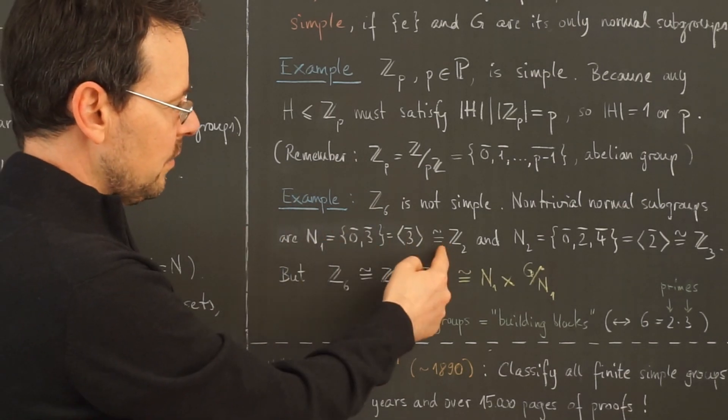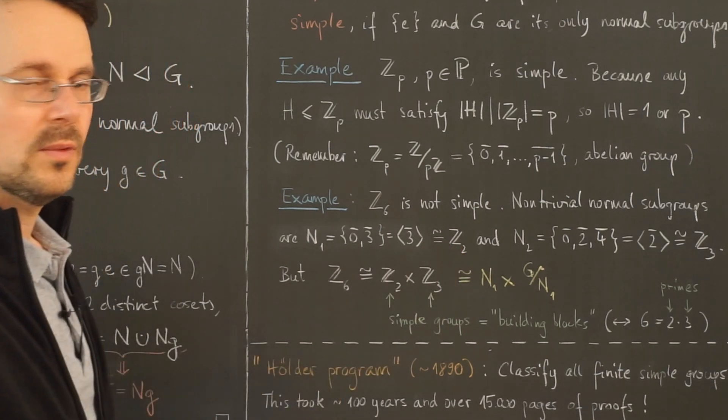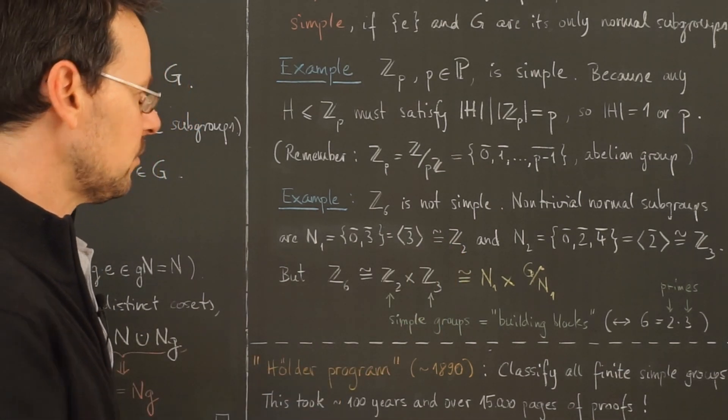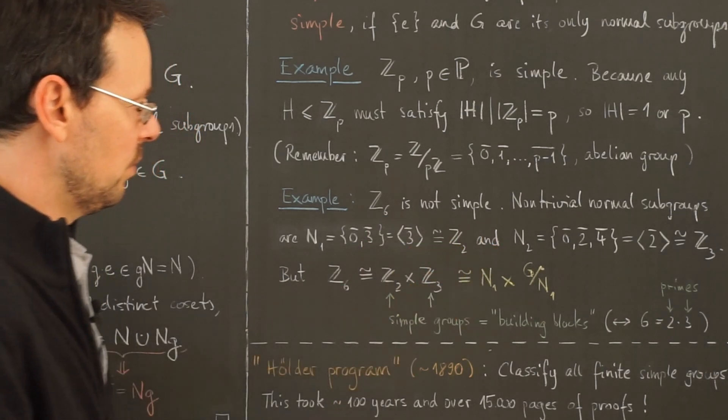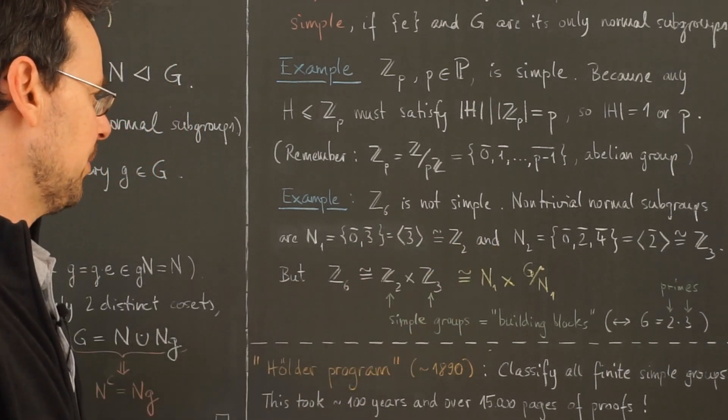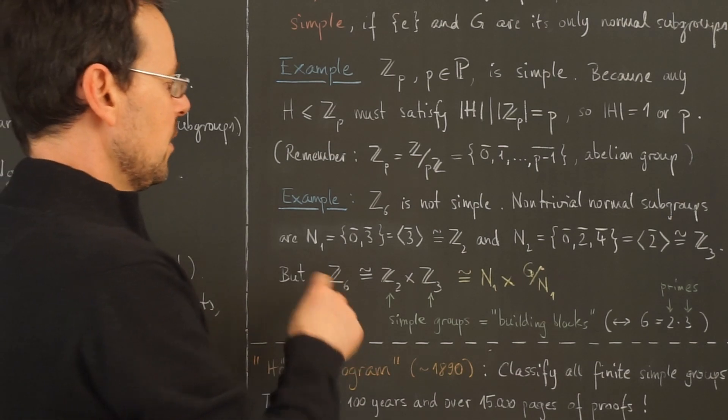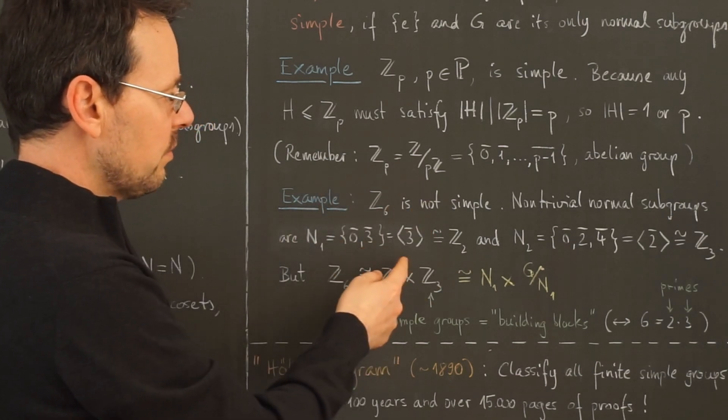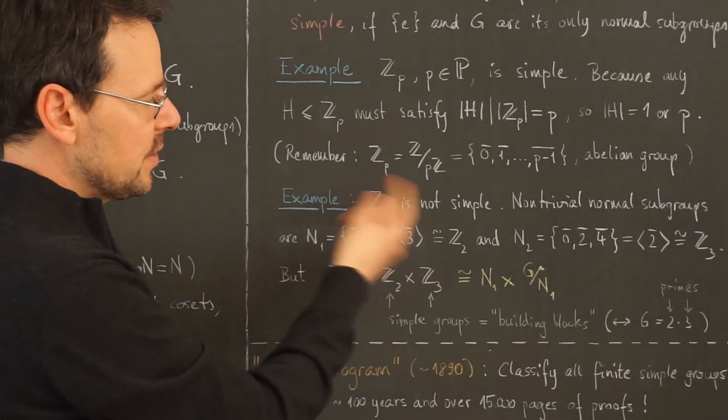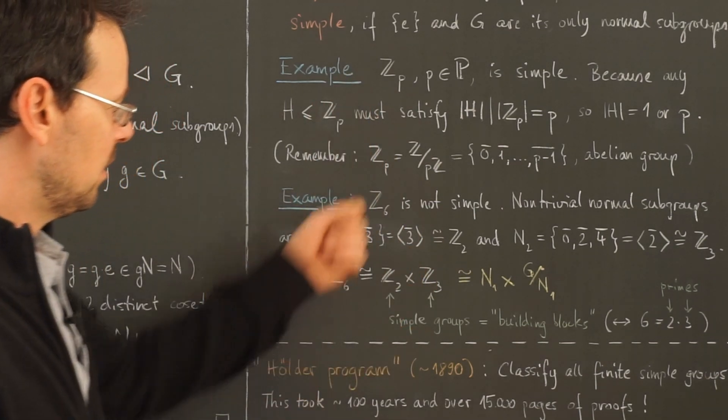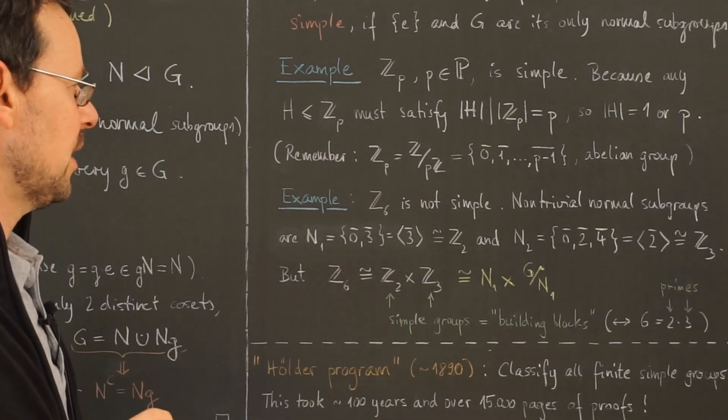And so this of course is isomorphic to Z sub 2, because there's only one group of order 2, namely this here up to isomorphism. So we already found one non-trivial subgroup, which is automatically a normal subgroup as explained above because we are in the abelian case.